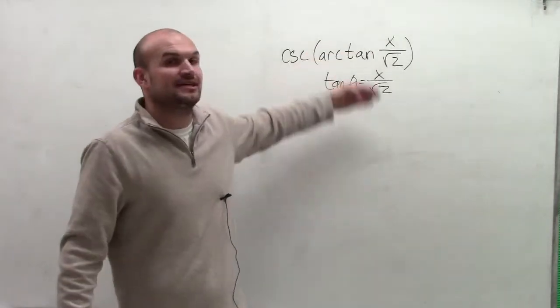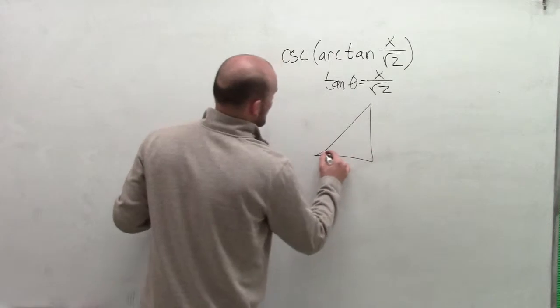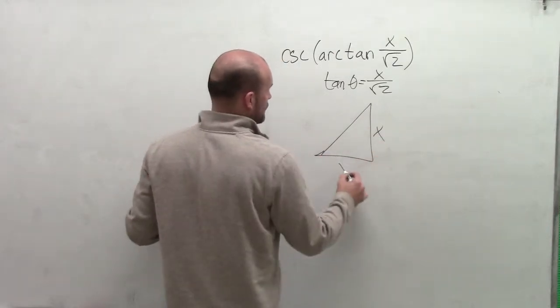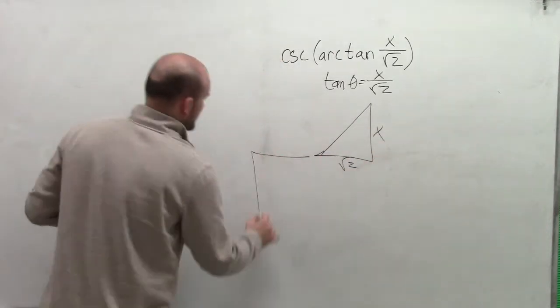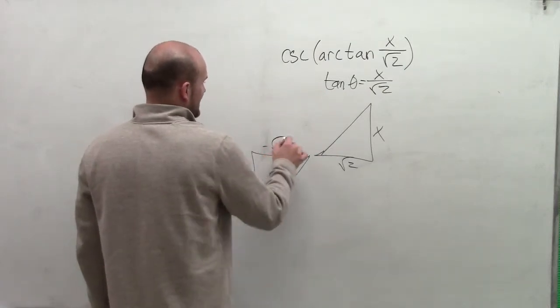So remember, tangent of an angle is equal to your opposite over adjacent. So I can create two triangles. I have a triangle here, which would be opposite over my adjacent. Or I could also create another triangle, which would be my opposite, negative opposite over negative adjacent.